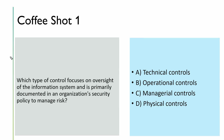Let's start with the first coffee shot. Which type of control focuses on oversight of information systems and is primarily documented in the organization's information security policy to manage risk? The keywords here are organization security policy and manage the risk.